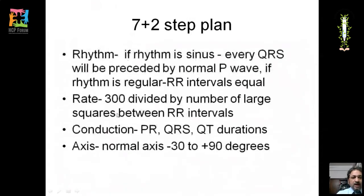To determine sinus rhythm, every QRS must be preceded by a normal P wave and the rhythm should be regular, meaning the RR intervals are equal. Once rhythm is confirmed, assess the rate by counting the number of large squares between RR intervals.